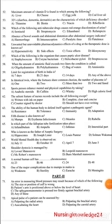In identical twins where fetuses share a common chorion, the number of placentas is: a) one, b) two, c) more than two, or two fused. The answer is a) one.